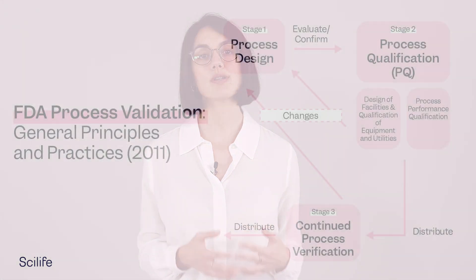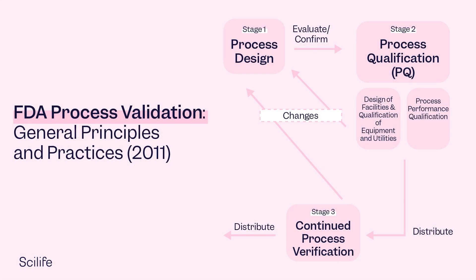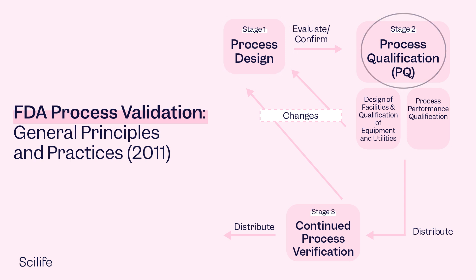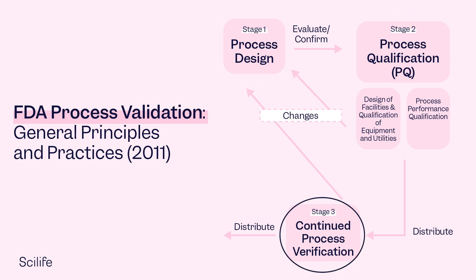According to FDA guidance, process validation — general principles and practices from 2011 — process validation involves three stages over the life cycle of the product and process: process design, process qualification, and continued process verification.